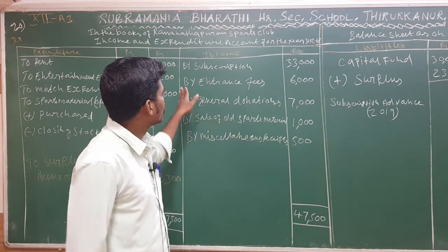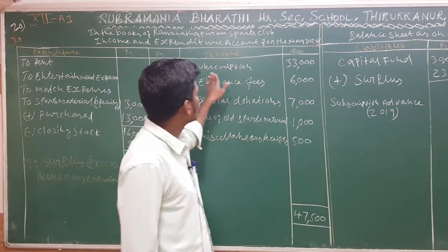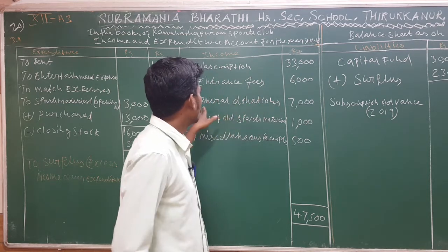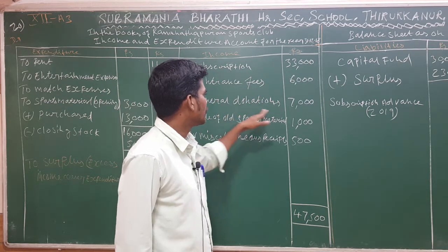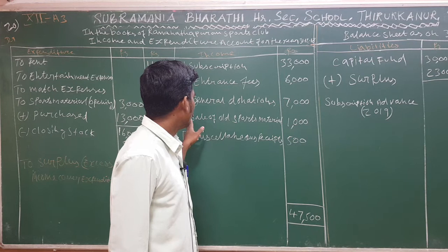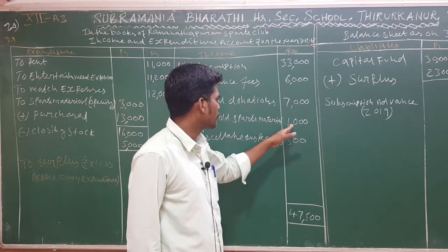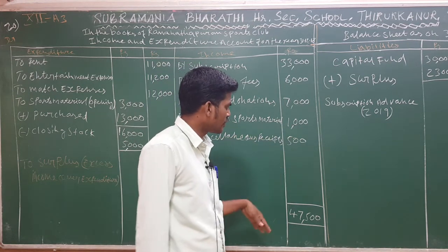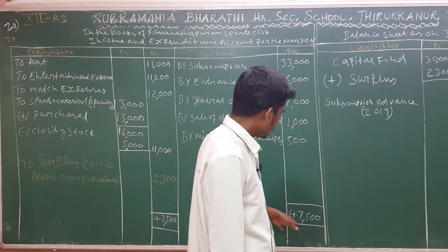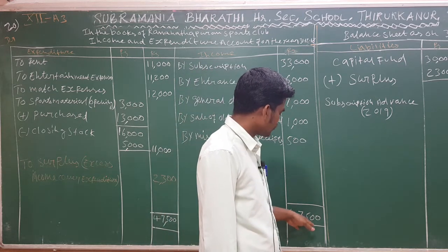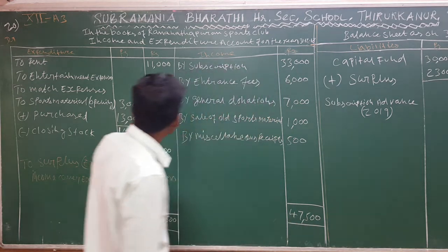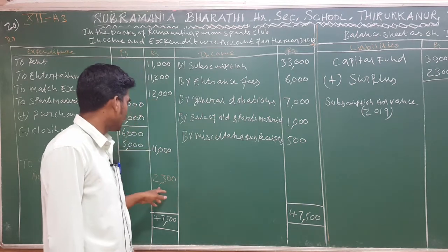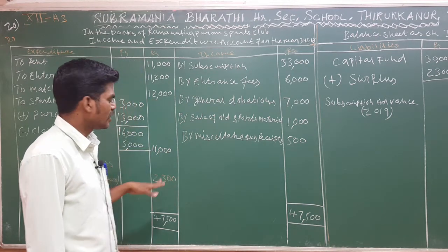On the income side: subscriptions 33,000, entrance fees 6,000, general donation 7,000, sale of old sports material 1,000, miscellaneous receipts 500. Total income is 47,500. After adding or subtracting relevant amounts, the balance comes to 2,300.